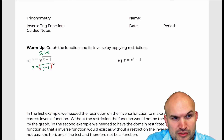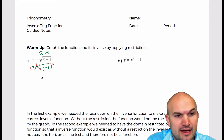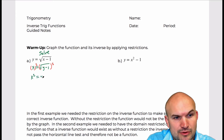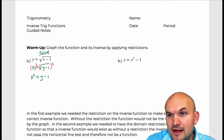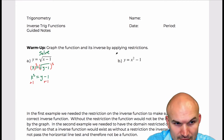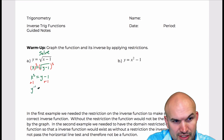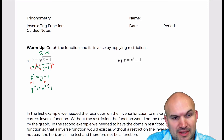To undo the square root, I'm going to square both sides. Then I get x² = y − 1, and I'm going to add 1 to both sides. Therefore, I get my inverse function — y inverse is going to equal x² + 1.